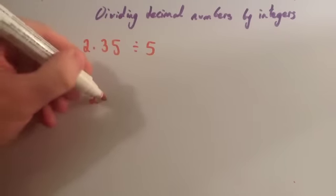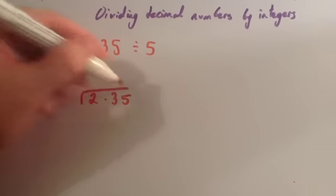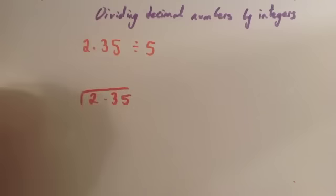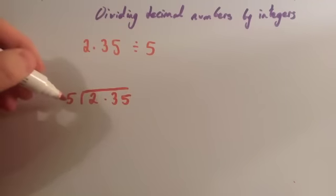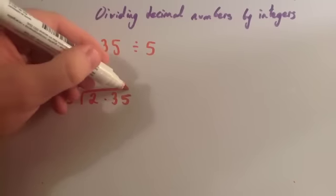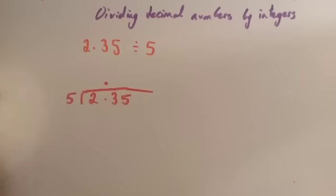We write 2.35, the number we're dividing, under the short line, or the bus shelter as some people call it, and we put the 5, what we're dividing by, to the left. You carry on the line of that. We've got our decimal point here, so you put your decimal point directly above it.